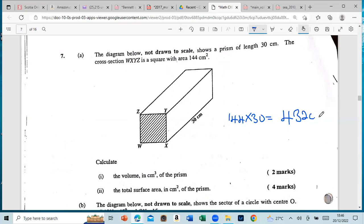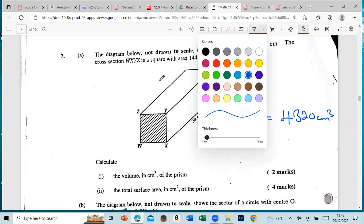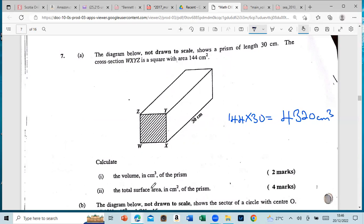And we know that it would be cm³. Part two says the total surface area in centimeter square of the prism. Now total surface area means you're going to find the area of all the faces. There are two identical faces, which is one here and another down here.